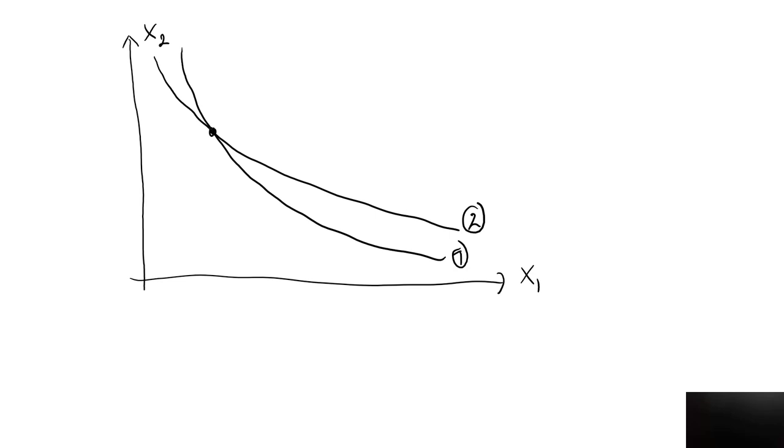Well, if you look at the bundle where these two indifference curves intersect, it must be the case that for this bundle, it's located on both the first indifference curve and the second indifference curve. Therefore, one and two cannot be two different indifference curves if they intersect.